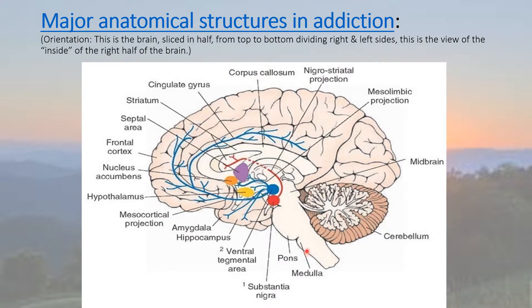In a reptile such as an alligator, the brain would pretty much be right here, and that would be about all there is to it. As we grew evolutionarily, the rest of the brain evolved. So when we're dealing with the disease of addiction, you can see the hippocampus, the amygdala. These areas right in here are still fairly primitive structures within the brain, and they are very old structures, evolutionarily speaking. These are the structures that deal with our emotions, and the addiction process is very much involved in all of this area, the nucleus accumbens included.